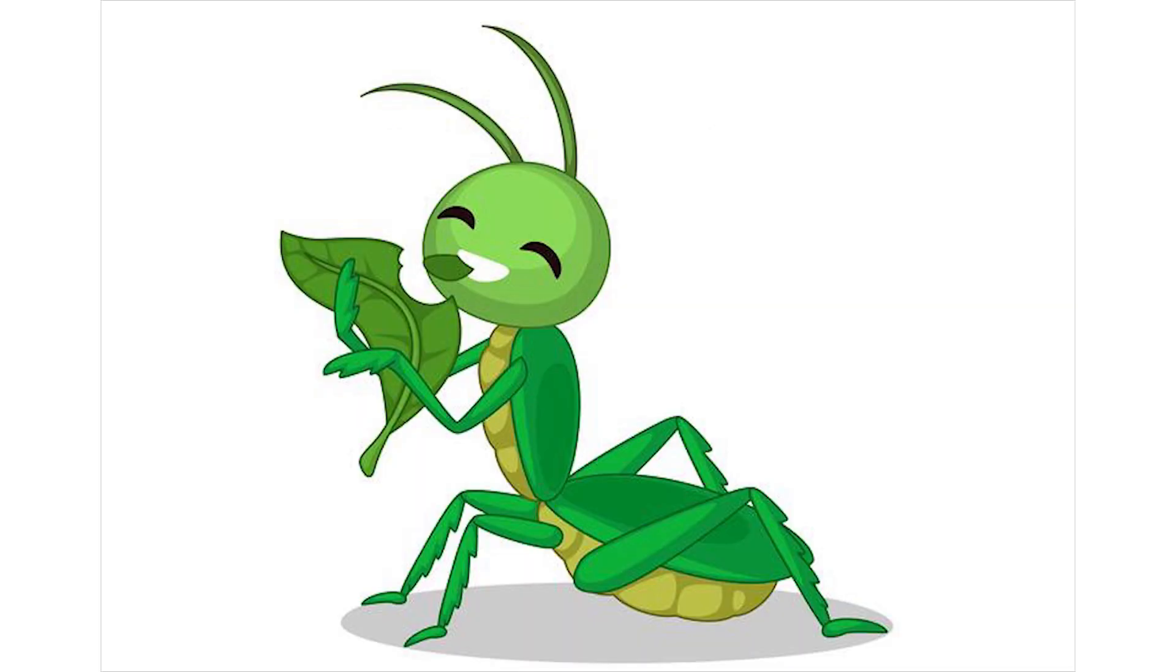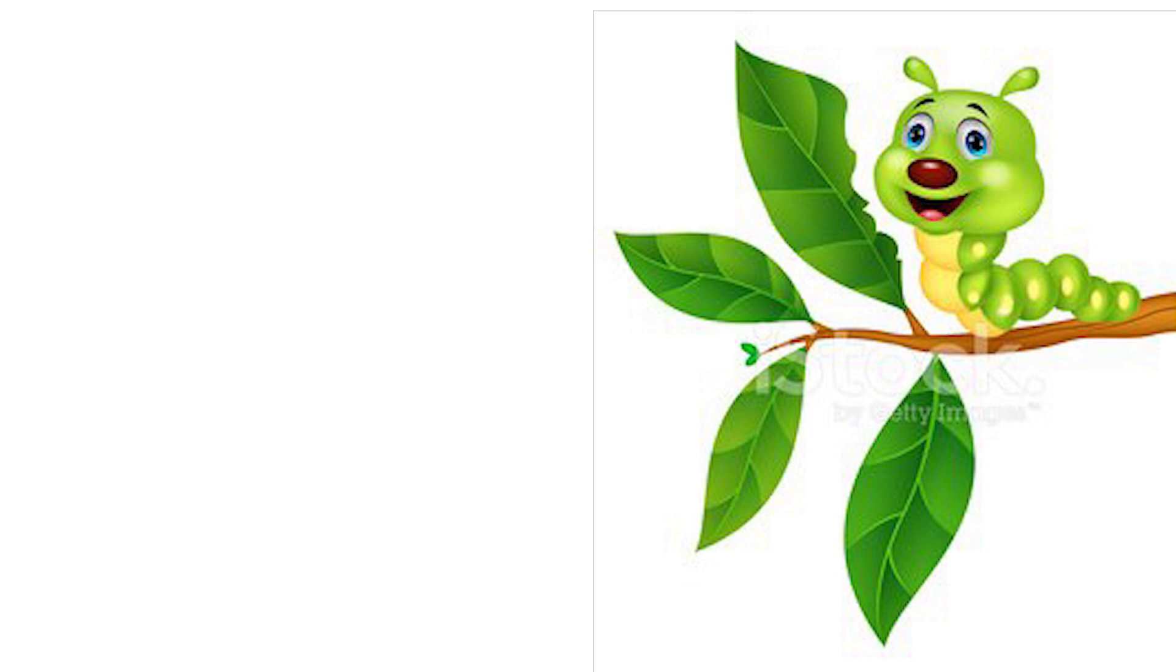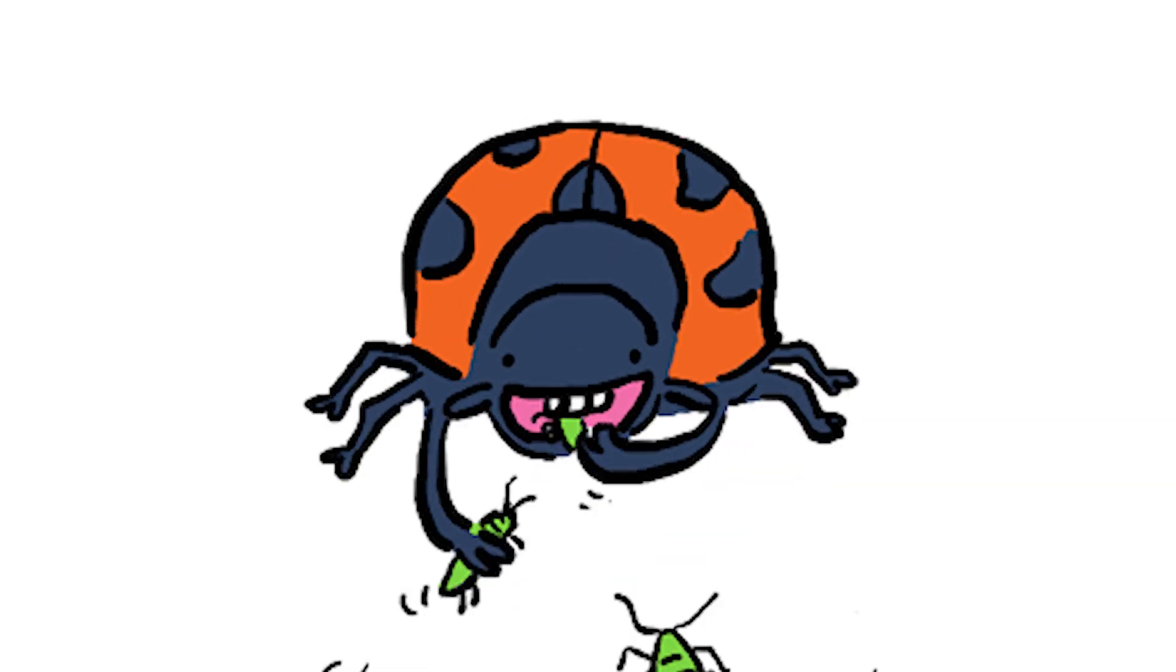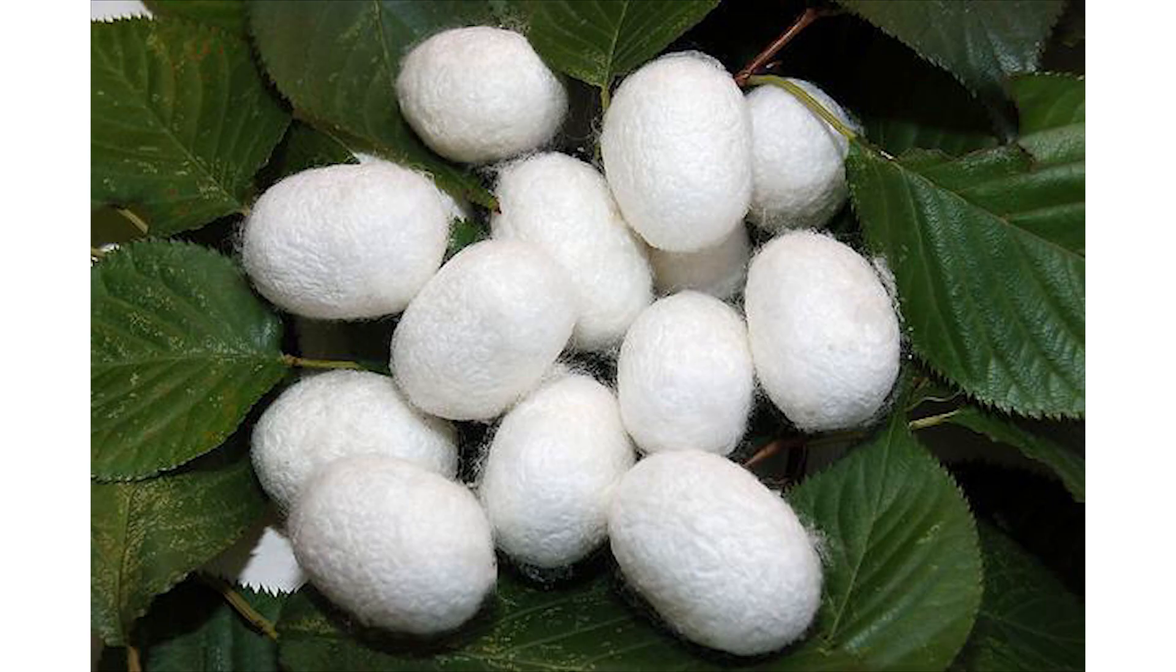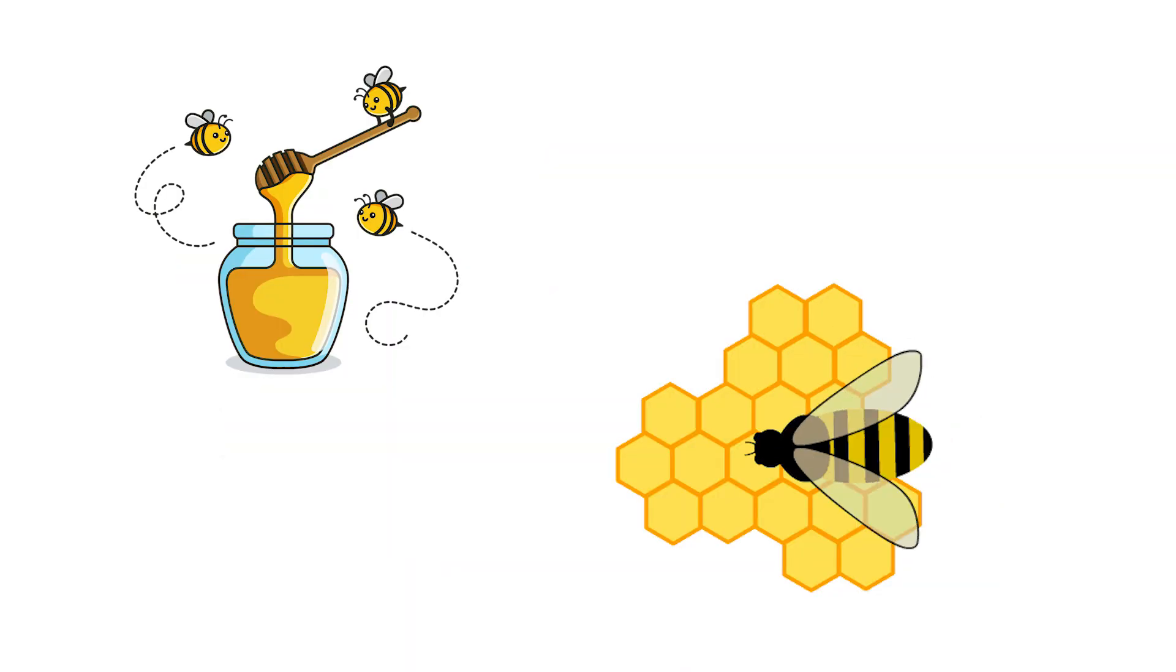Some mini-beasts eat plants or flower nectar. Some mini-beasts munch on wood and some eat other mini-beasts. Some mini-beasts produce products which are used by humans, like silk comes from silkworms and honey is a well-known product of honeybees which is very beneficial for us.